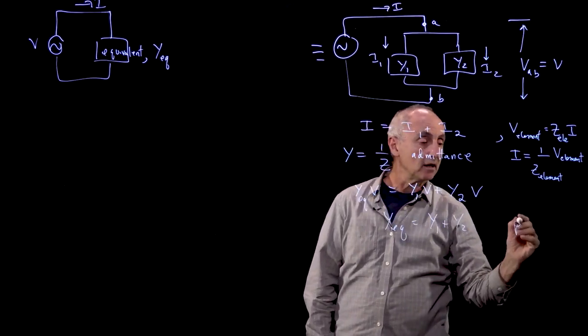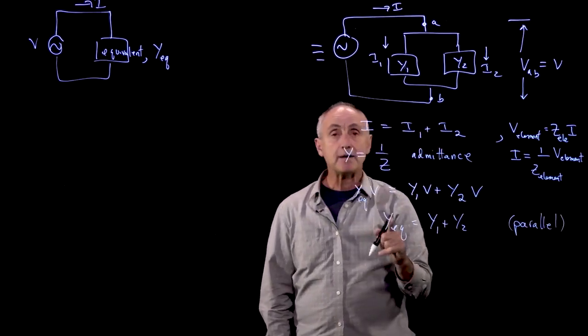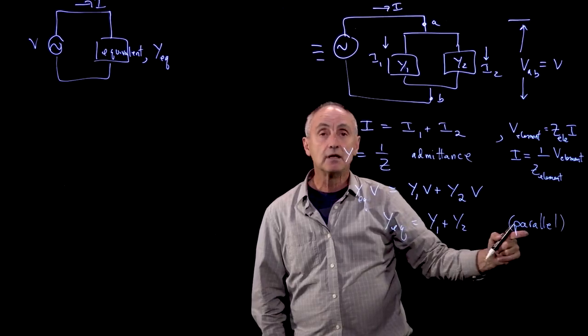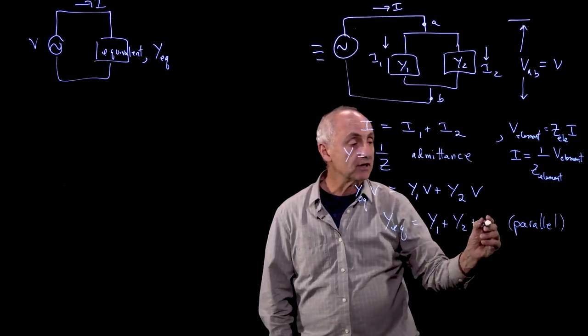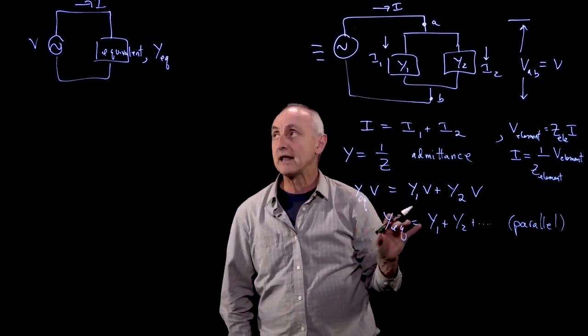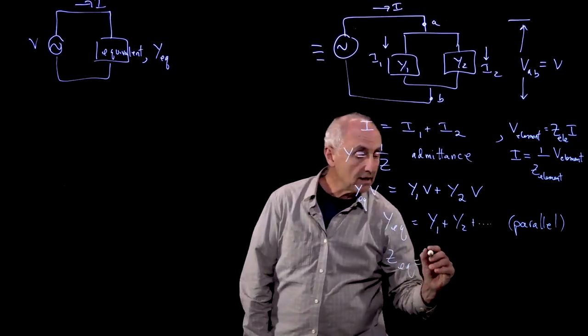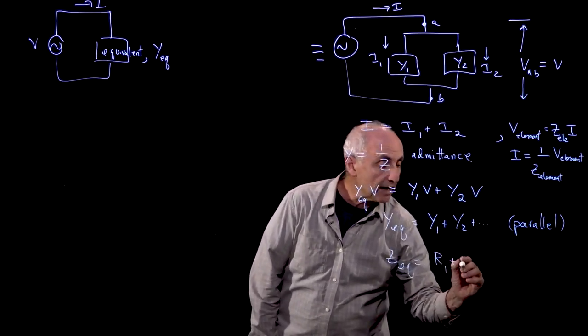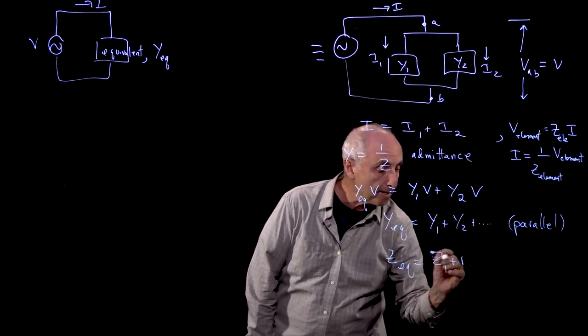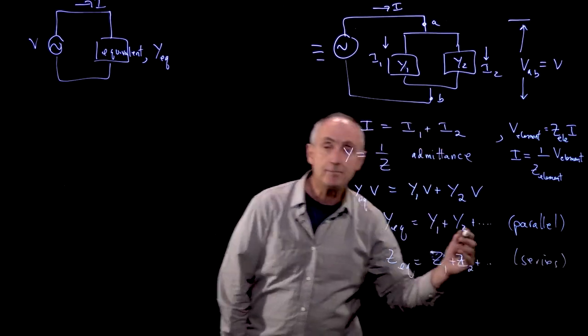two elements are connected in parallel, the admittance adds. If we had many elements, that would be the case. You can see that when we had elements in series, the impedance adds in series. And when elements are in parallel, the admittance adds.